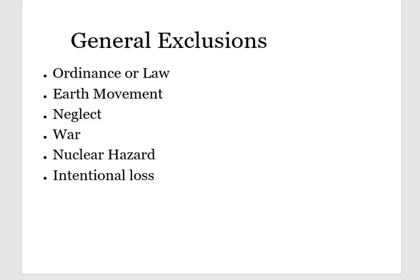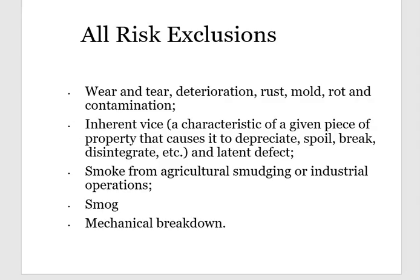These are your basic general exclusions on all dwelling policy forms. Then you have your all risk exclusions. All risk exclusions mean that everything covered in an open peril policy will have these exclusions — so everything is covered except wear and tear, deterioration, rust, mold, rot, and contamination. Those would not be covered. Inherent vice — which is a characteristic of a given piece of property that causes it to depreciate, spoil, break, or disintegrate — would also not be covered.